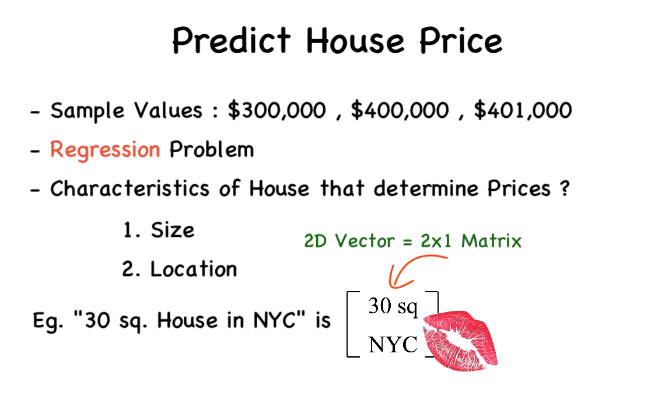So, for the first feature, let's just take the number of squares without the unit. And instead of using the city name for the second feature, we use the cost of living index for that city. Since this value is 100 for New York City as of 2017, our feature vector would be 30, 100.